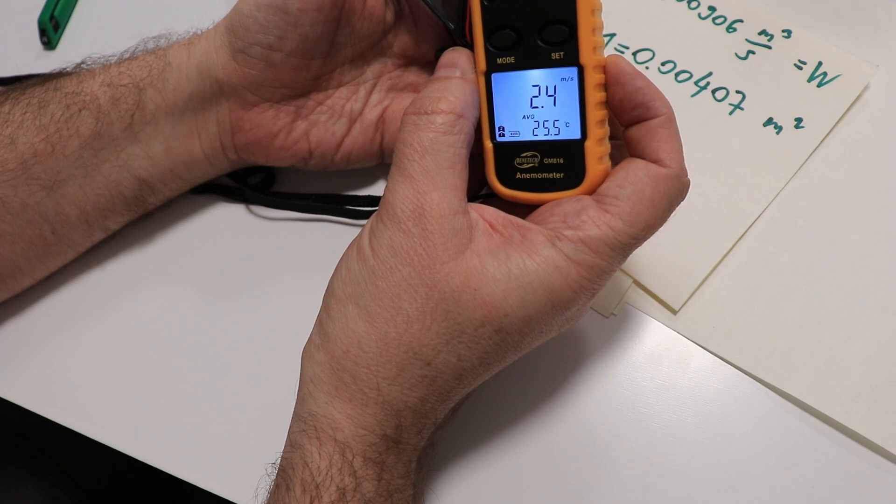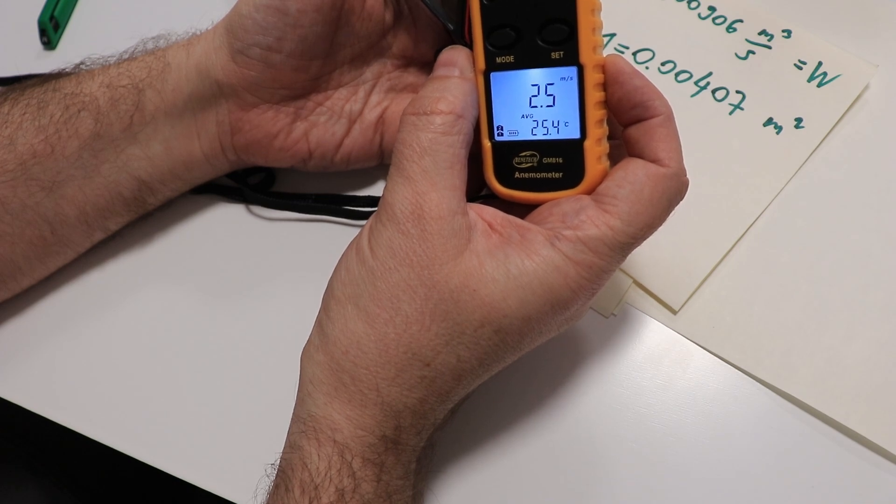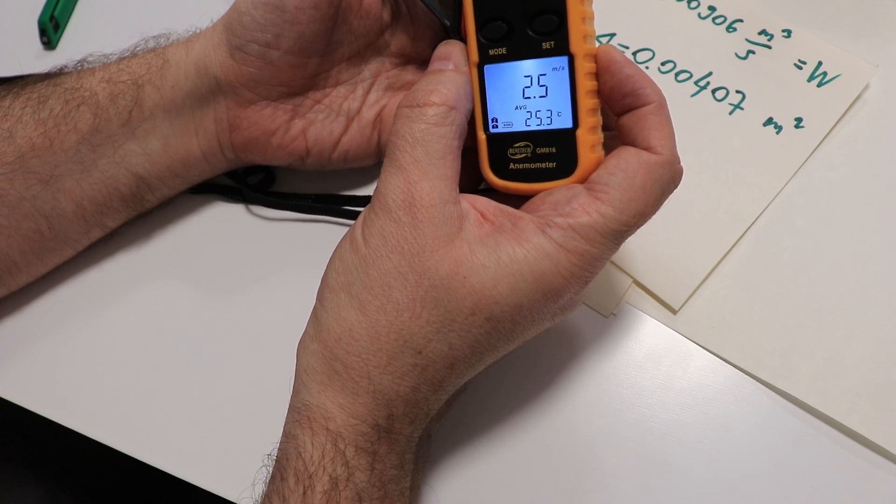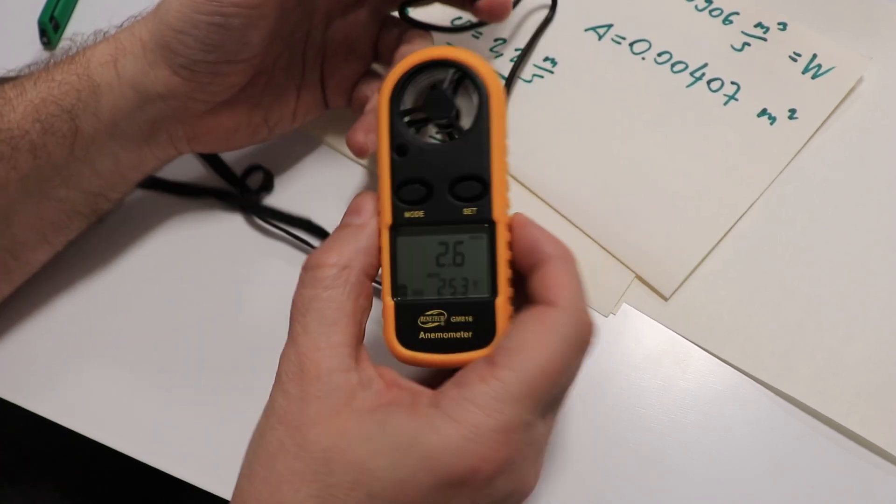I got approximately 2.5 to 2.4 meters per second average velocity. This means one of these three elements is incorrect, and I believe that's the specification of the fan.